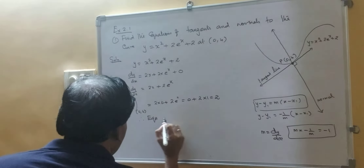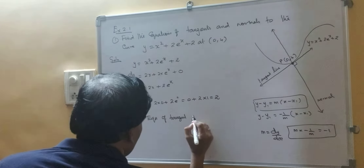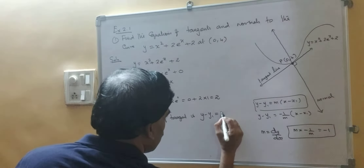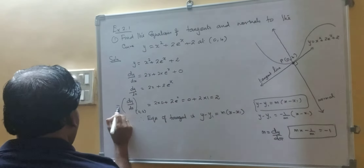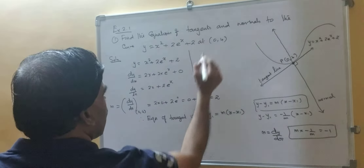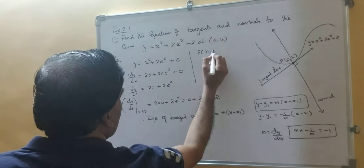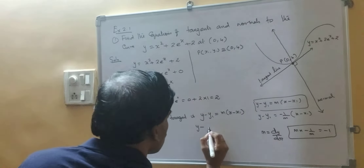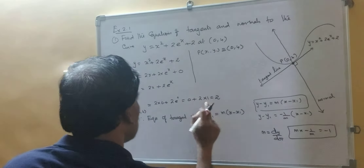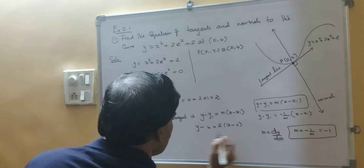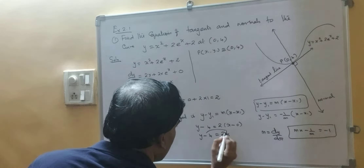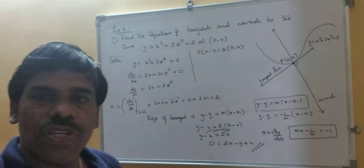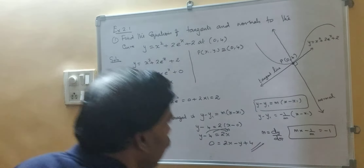Equation of the tangent is y minus y1 equal to m into x minus x1. Here p is x1 comma y1 equal to 0 comma 4, so x1 is 0 and y1 is 4. Therefore y minus 4 equal to 2 into x minus 0, so y minus 4 equal to 2x. Taking everything to one side: 2x minus y plus 4 equal to 0. This is the equation of the tangent at the given point P 0 comma 4.